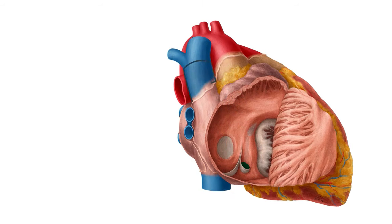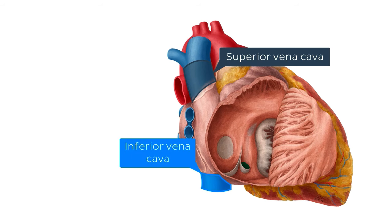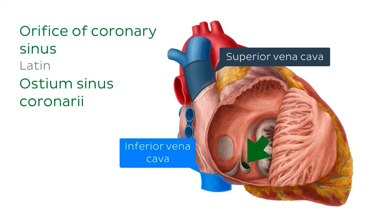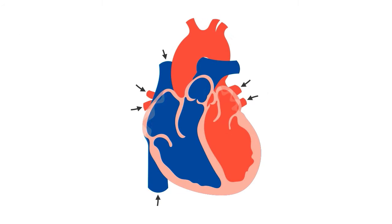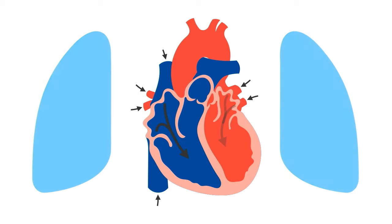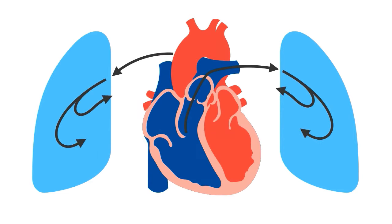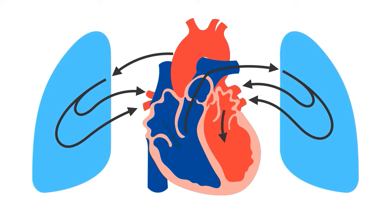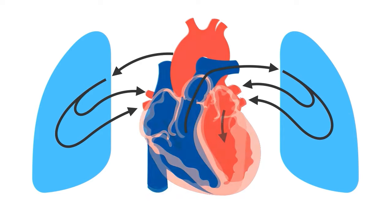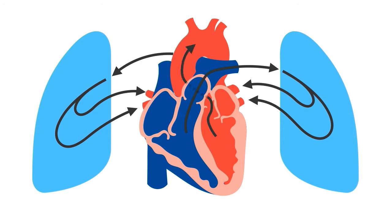The right atrium receives deoxygenated blood from the superior and inferior vena cavae, as well as the coronary sinus. When the right atrium contracts, it pushes blood through the right atrioventricular valve into the right ventricle. The right ventricle then contracts, passing the blood into the pulmonary trunk via the pulmonary valve to reach the lungs. In the lungs, the blood gets oxygenated and makes its way back to the heart, entering the left atrium through the pulmonary veins. The left atrium contracts and pushes blood into the left ventricle through the left atrioventricular valve. The left ventricle pushes oxygenated blood through the aortic semilunar valve into the aorta, through which blood is distributed throughout the body.